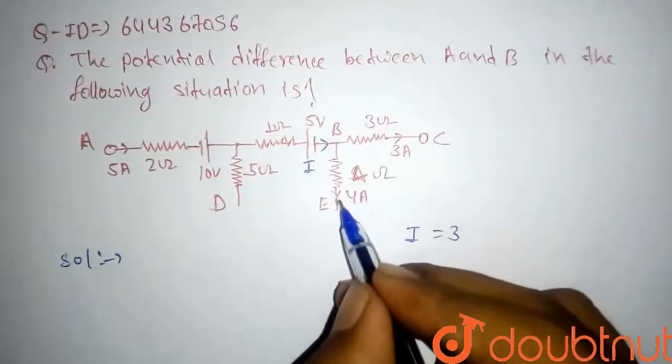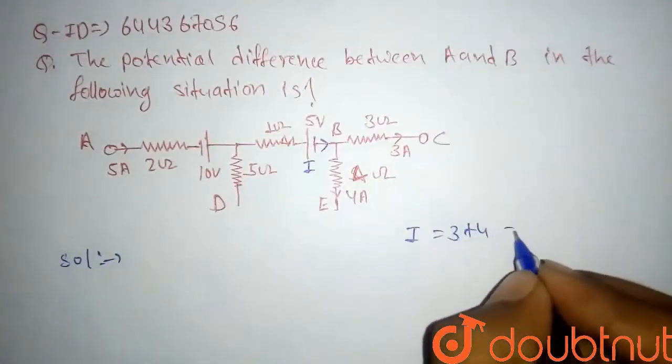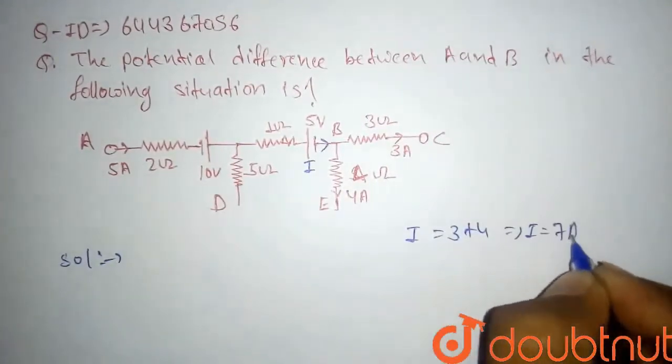It will be equal to 3 plus 4, so here our I comes out to 7 ampere. So current in this branch is 7 ampere.